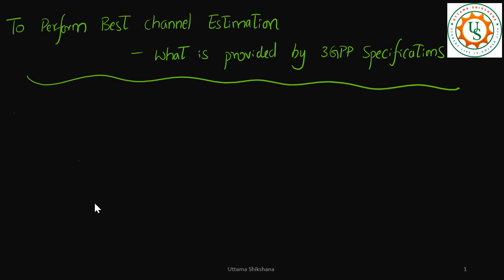Hey guys, welcome back. In the first video I was talking about why we need channel estimation in the first place, then to perform the channel estimation what is required—that is pilot symbols—and to perform the best channel estimation what are the requirements. So I was talking about good SNR and that we should transmit the pilots on more number of symbols and things like that.